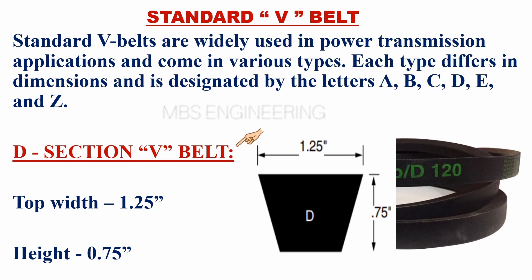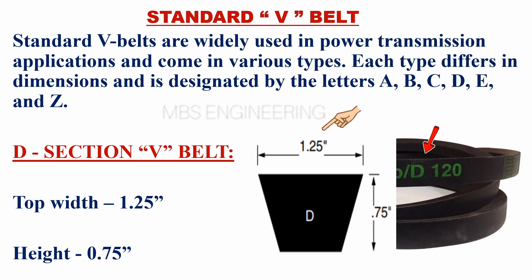We will understand the D-section V-belt. The top width of the D-section V-belt is 1.25 inches. The height of the D-section V-belt is 0.75 inches. Please take a look at the figure that shows section D V-belt.